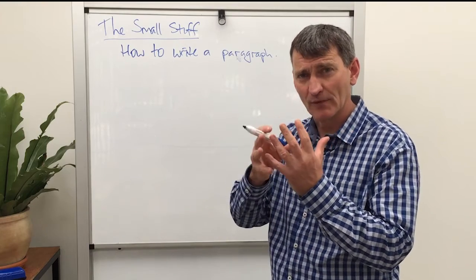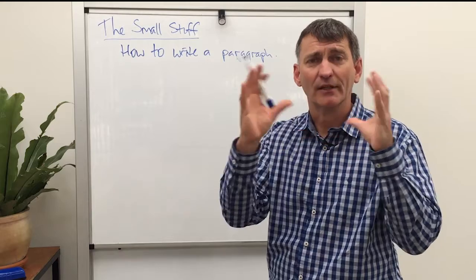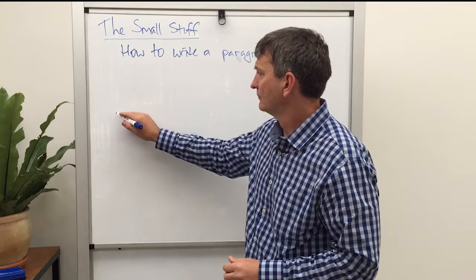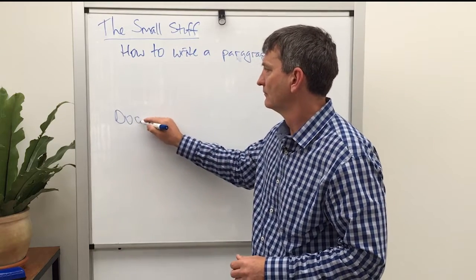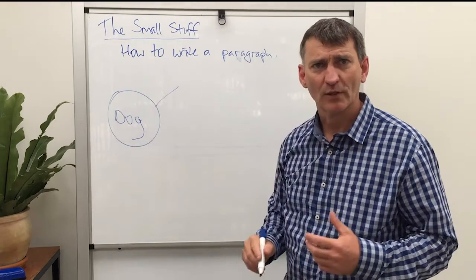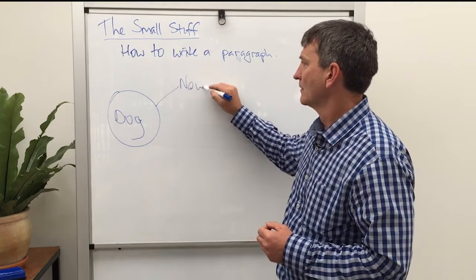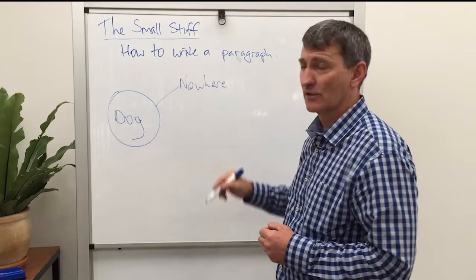So what were the ideas I came up with there? Well, the main thing is this is all about a dog. What other pieces of information did we come up with? Well, the dog's name was Nowhere.